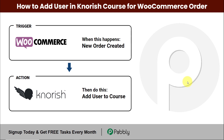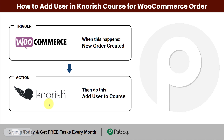Hello everyone, welcome to Pably. In this video we are going to understand how to add a user in Nourish course for WooCommerce orders. My objective is that every time a user has purchased a particular product from WooCommerce — let's say an online course — the moment a new order is created in WooCommerce, the user should automatically be added to the same course in Nourish, which is an online course platform. To do this we will have to integrate WooCommerce and Nourish, and this can be done using Pably Connect. My trigger application will be WooCommerce and my action application will be Nourish.